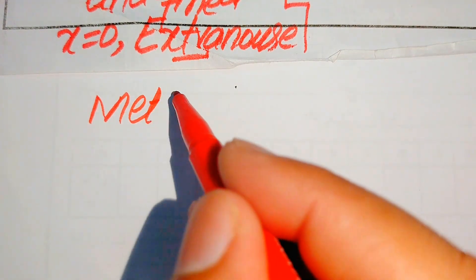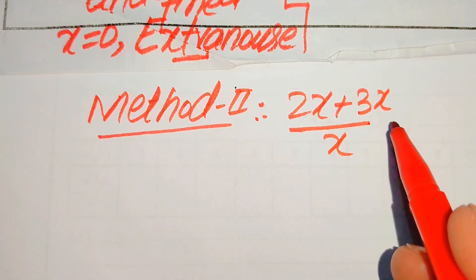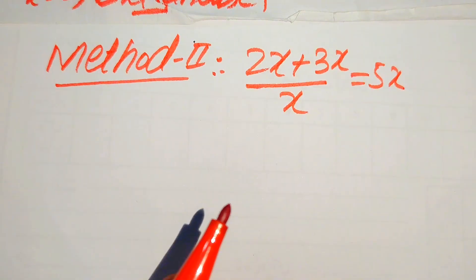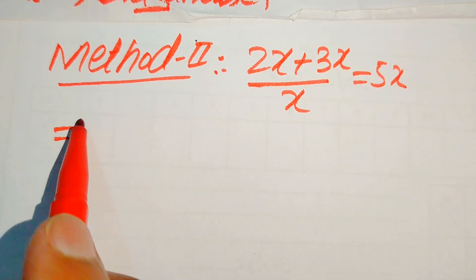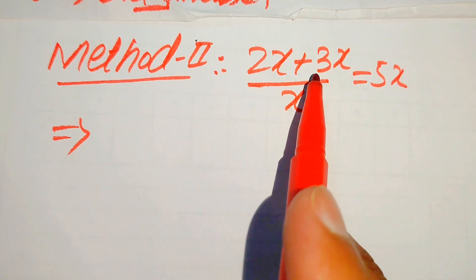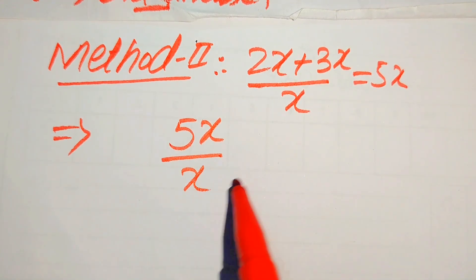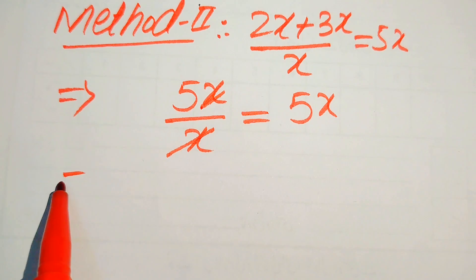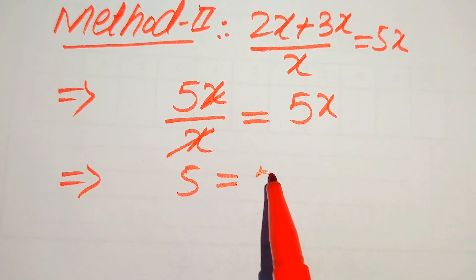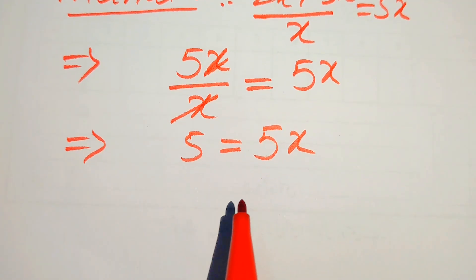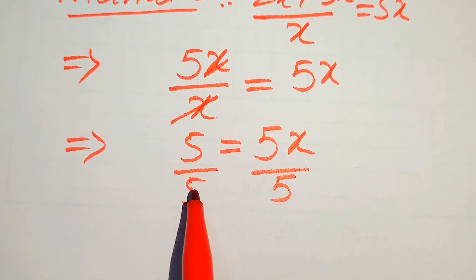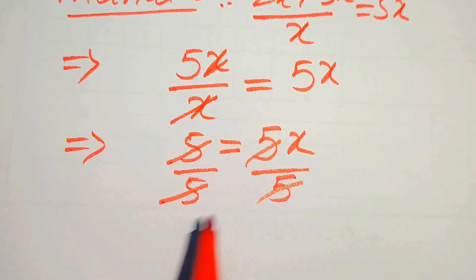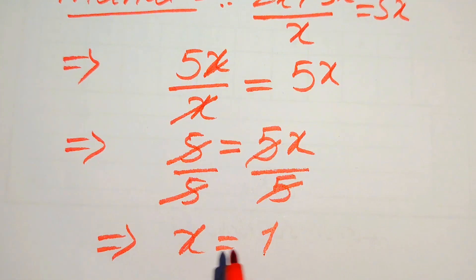Now in the next steps we again solve this problem using the second method. The given question statement is 2x plus 3x divided by x equals 5x. In the second method I give you a smarter technique to find x. Here 2x plus 3x becomes 5x divided by x equals 5x, and this x is cancelled by this x, giving 5 equals 5x. To find x we divide both sides by 5, the 5s cancel, and we get x equals 1.